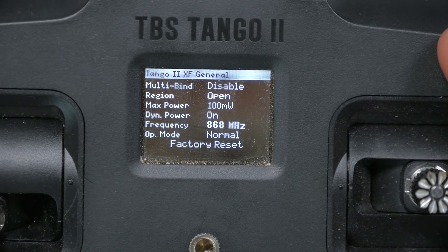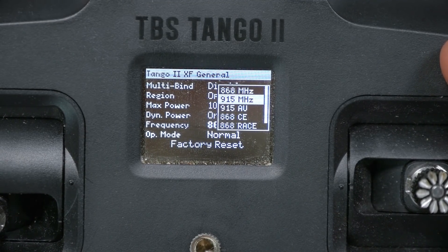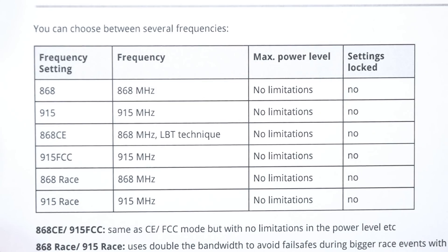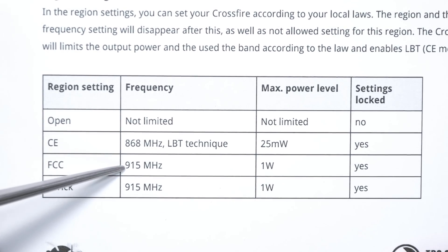Instead, I'm going to manually choose the frequency. When we look at the frequency, you might think the choice would just be 868 or 915, but it's actually a little more complicated than that. Setting the frequency to 868 or 915 will put Crossfire on those frequency bands with maximum output power and no other restrictions. This is what most people are going to do, even though technically that isn't going to be legal in some areas. The FCC setting causes the radio to operate at 915 MHz with a maximum output power of 1 Watt, but some Crossfire devices can go up to 2 Watts — so you can decide whether to limit to 1 Watt or go to full output power.